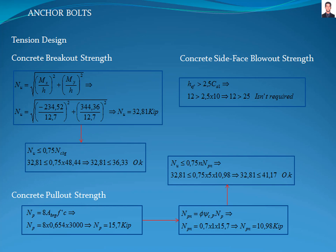Due to the seismic design, verification shall satisfy paragraph C of section 17.10.5.4 of the ACI 318 standard, where N is the quantity of anchors in tension. The verification passed. The concrete side-face blowout strength verification is not required because the embedment depth of the anchor is not greater than 2.5 times cA1.